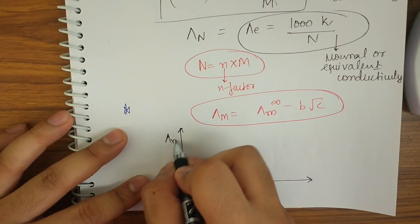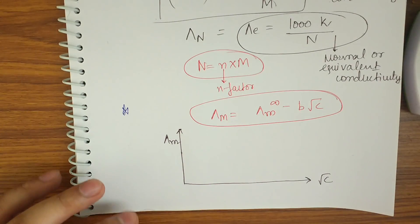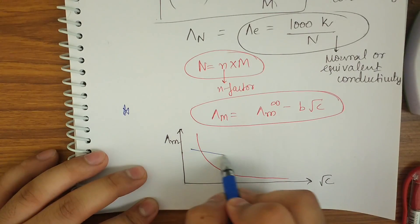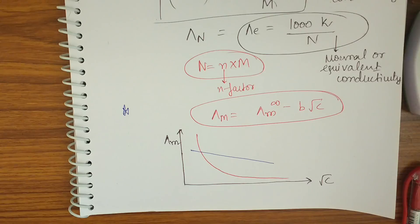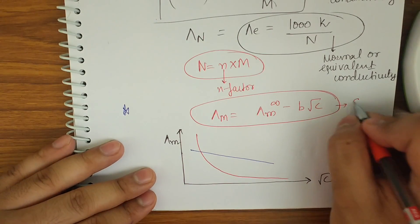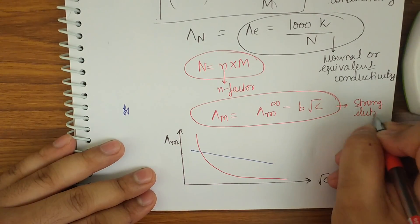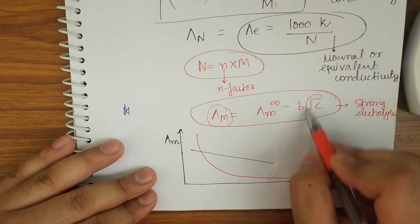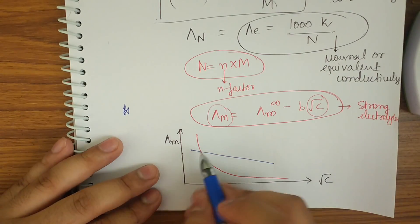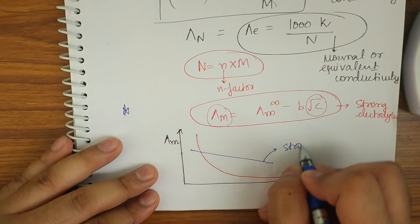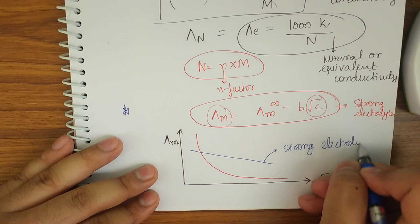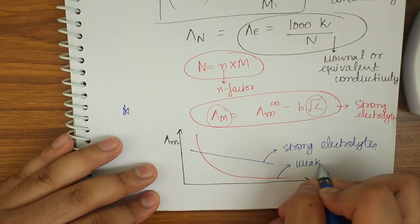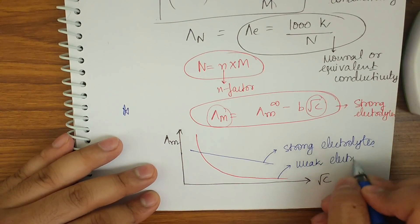Let me show you an experimental graph drawn between λm and √C. Taking two lines — one in red and one in blue — we can see that the equation for strong electrolytes gives a straight line, since λm can be taken as y and √C as x. The red graph is for weak electrolytes.